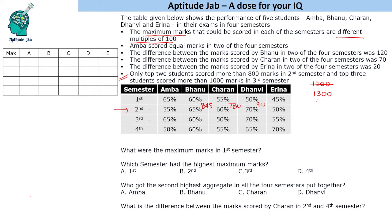Let us see if it can be 1400 also. If we take 1400, 60% becomes 840. So 1400 is not possible because three students would exceed 800. Therefore, the maximum marks in the 2nd semester are 1300.